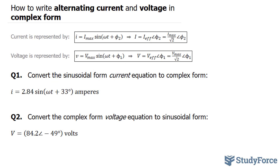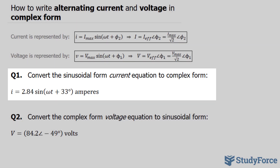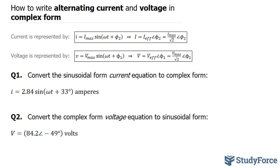In this video, I'll show you how to write alternating current and voltage in complex form. The first question reads: convert the sinusoidal form current equation to complex form. The equation that we have is i is equal to 2.84 sine omega t plus 33 degrees, and it's in amperes.